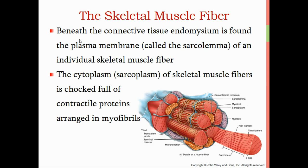When someone says muscle fiber, that is synonymous with a muscle cell — that's the same thing. The cytoplasm: remember, all cells have a fluid inside the plasma membrane called the cytoplasm. Cyto means cell; plasm is short for plasma, meaning fluid — this is the cell fluid. So the cell fluid of a muscle cell is called the sarcoplasm. The sarcolemma is the cell membrane of a muscle cell, and the sarcoplasm is the cytoplasm of a muscle cell or muscle fiber. It is full of contractile proteins arranged in smaller units called myofibrils.